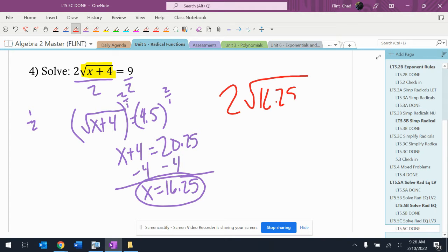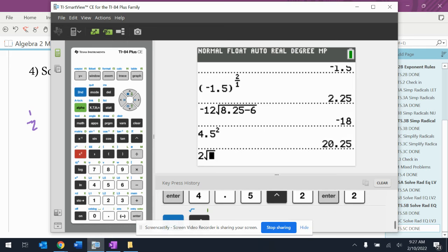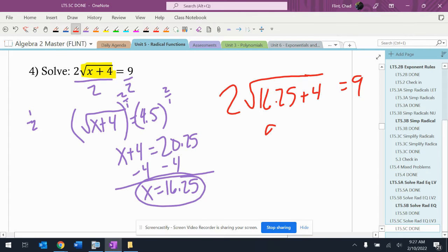So 2 radical 16.25 plus 4 is supposed to equal 9, and it does. So that means the answer works.